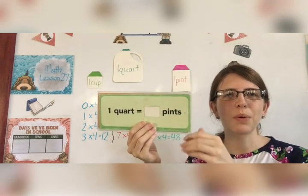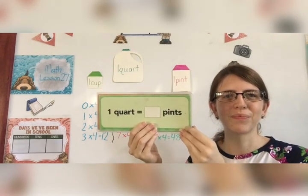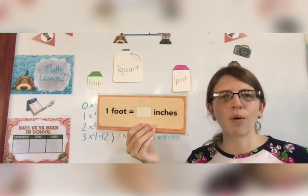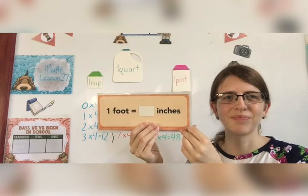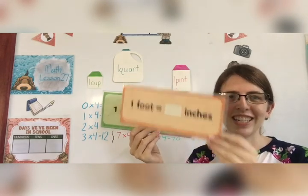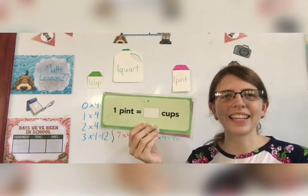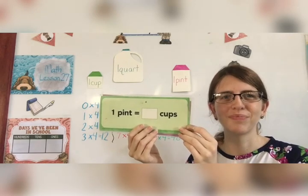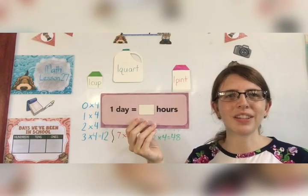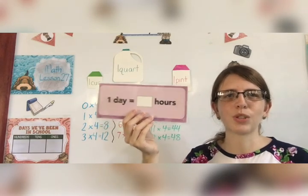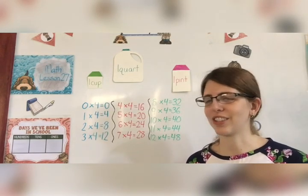1 quart equals 2 pints. 1 foot equals 12 inches. 1 pint equals 2 cups. 1 day equals 24 hours. Good job.